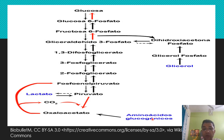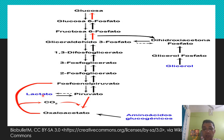Amino acids are converted into oxaloacetate, and after the decarboxylation process, oxaloacetate changes into phosphoenolpyruvate (PEP). The end product of glycolysis is pyruvate, and this pyruvate is also converted into lactate in muscles.